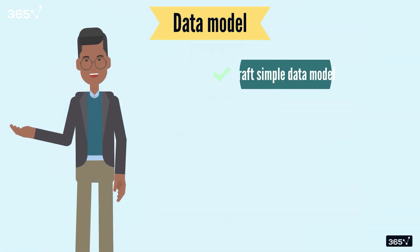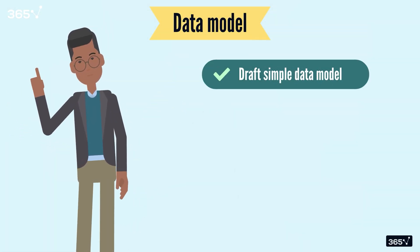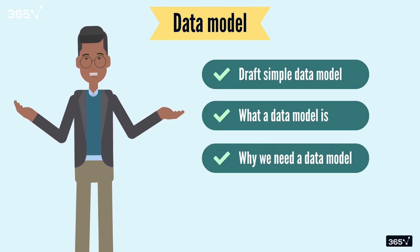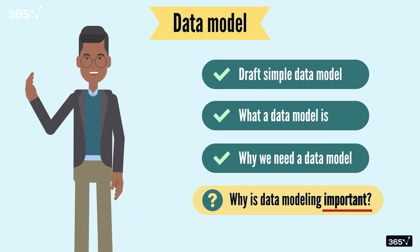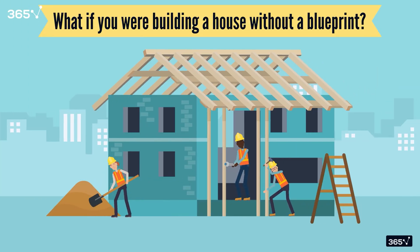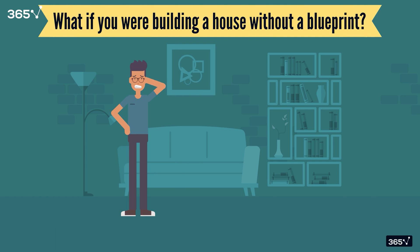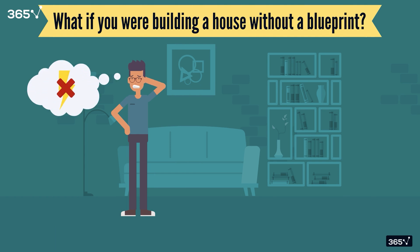We've seen a rough draft of a simple data model, and you hopefully now have an idea of what a data model is and what purpose it's supposed to serve. But why is data modeling important? If you really were building a house without a blueprint, can you imagine what might go wrong? You might end up with a beautiful kitchen, except the plumbing does not get water, or the drain does not go into the main sewer. Or maybe you build a stunning living room, only to realize that the electric wiring is not connected to the main line. Without a plan, you're likely to waste time and resources fixing problems later.